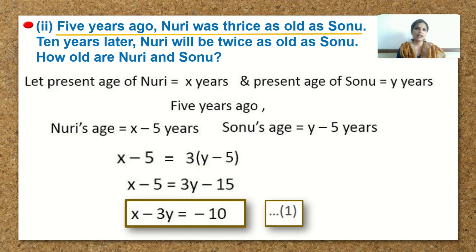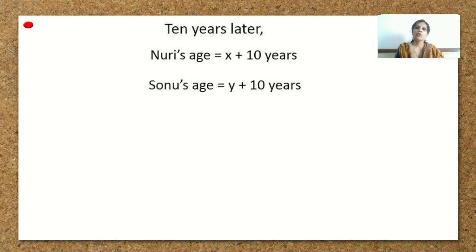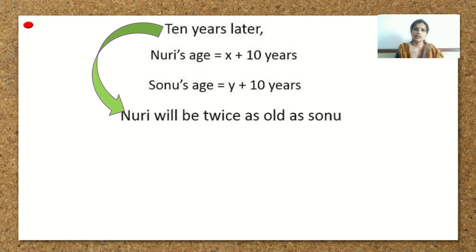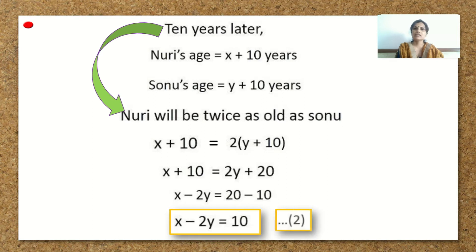The second condition: 10 years later. We have taken the present ages of Nuri and Sonu as x and y, so after 10 years, Nuri's age will be x plus 10 and Sonu's age will be y plus 10. After 10 years, Nuri will be twice as old as Sonu. So, x plus 10 is equal to 2 times y plus 10. Solving this gives x plus 10 equal to 2y plus 20. Rearranging, x minus 2y is equal to 10, and this is equation 2.